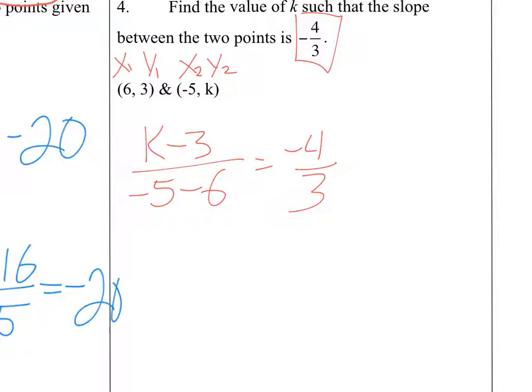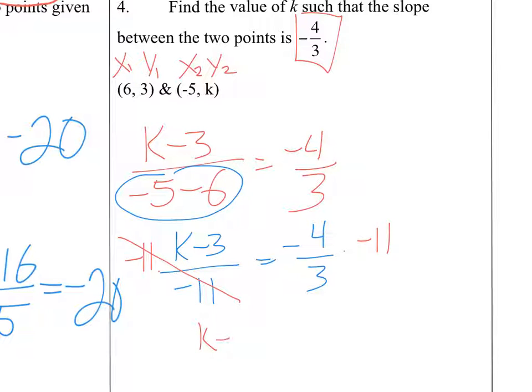Okay, I'm going to simplify my denominator. So we've got k minus 3 over negative 11 is equal to negative 4 over 3. I'm going to multiply both sides by negative 11. That cancels out the left side. So I've got k minus 3 is equal to negative 4 times negative 11 is 44. 44, and we know that's 11 over 1. 3 times 1 is 3.